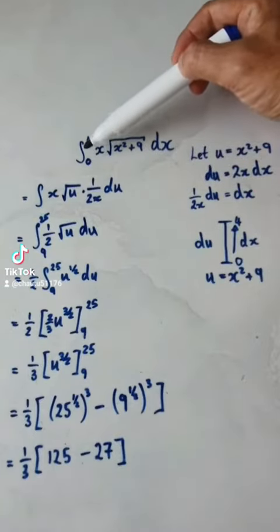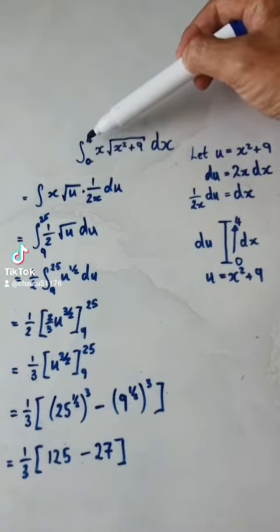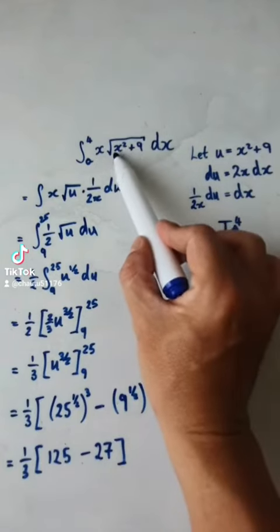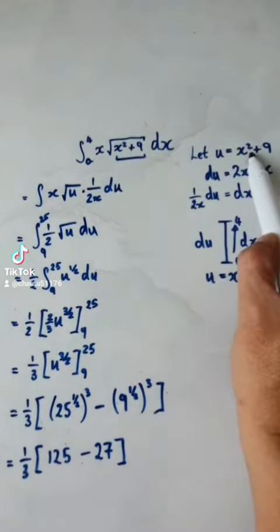The hard part is the limit of integration. You're integrating from 0 to 4. So to do this, we say let u be this thing.